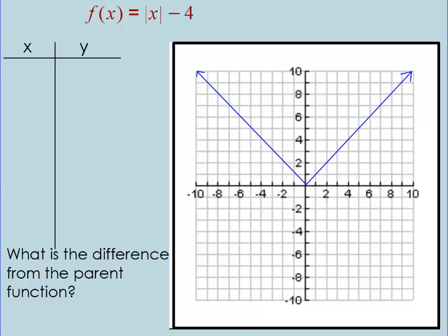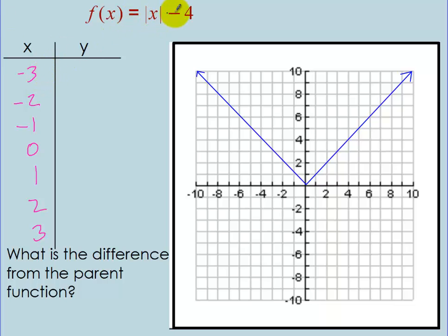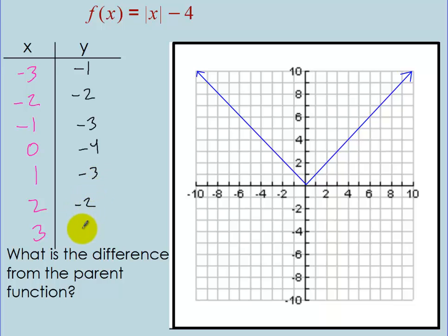Now let's see what happens when we change to f of x equals absolute value of x minus 4. I'll use the same x values: negative 3, negative 2, negative 1, 0, 1, 2, 3. Plugging in negative 3: absolute value of negative 3 is 3, minus 4 gives negative 1. For negative 2: 2 minus 4 is negative 2. For negative 1: 1 minus 4 is negative 3. For 0: 0 minus 4 is negative 4. Then for 1, 2, 3 we get negative 3, negative 2, and negative 1.